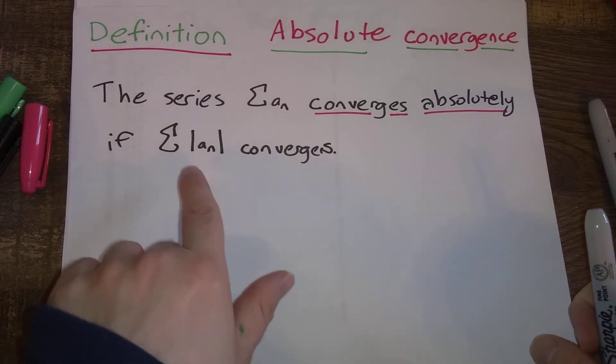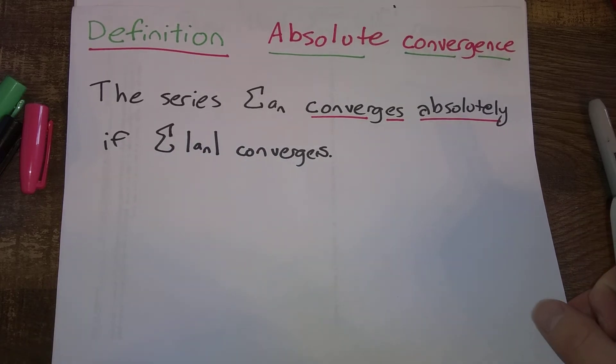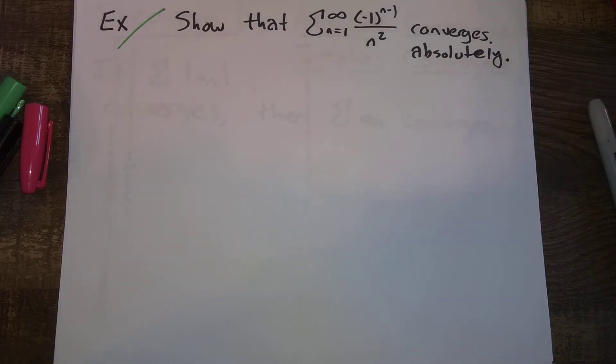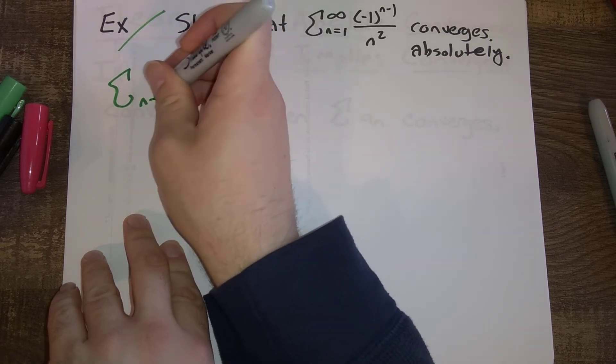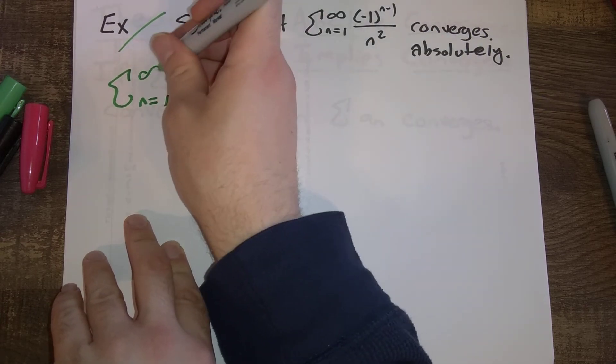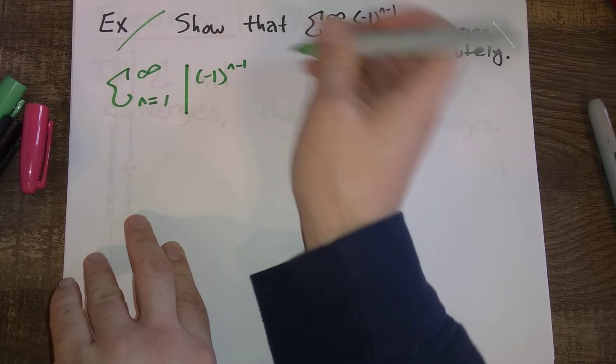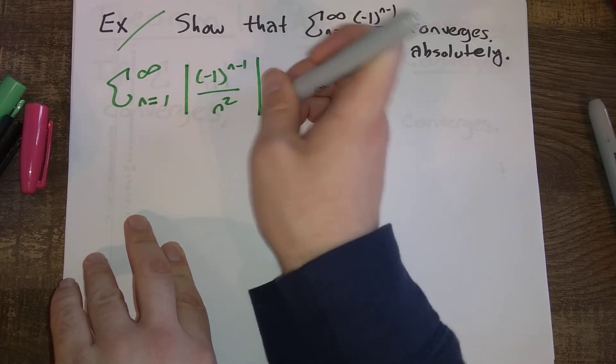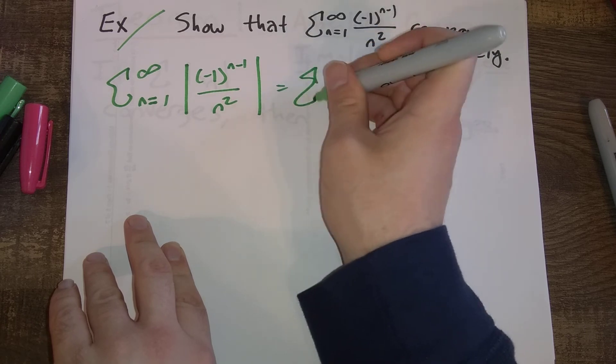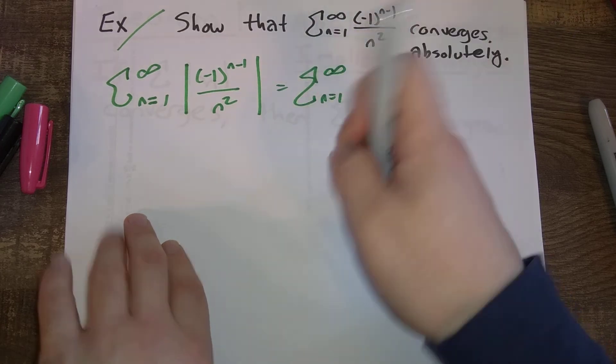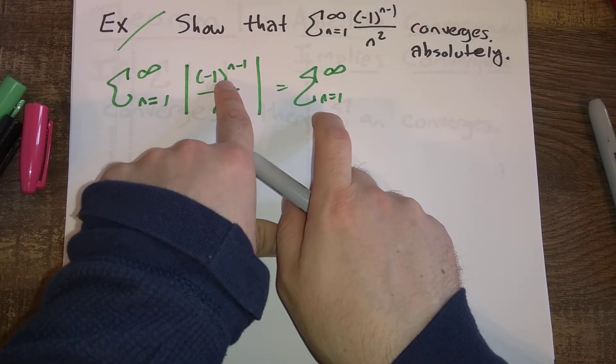So how do we do that? We need to look at the sum where we replace each term of the series with its absolute value. So we're going to look at the sum from one to infinity of the absolute value of (-1)^(n-1) divided by n squared.